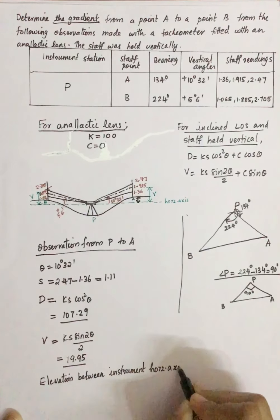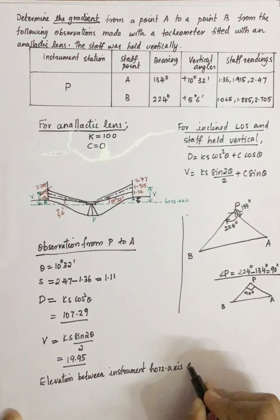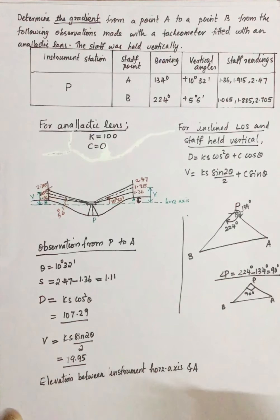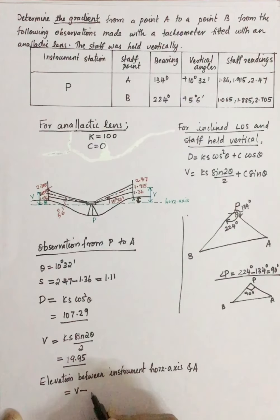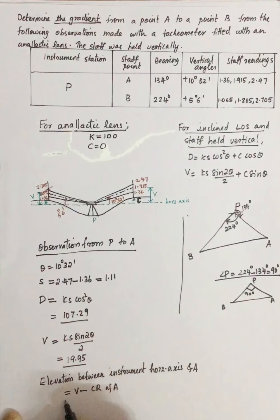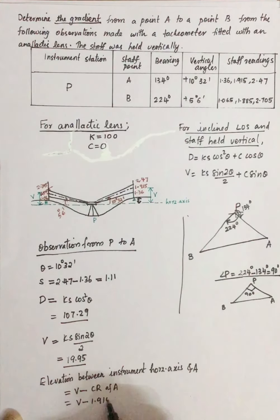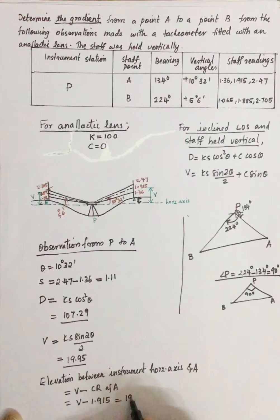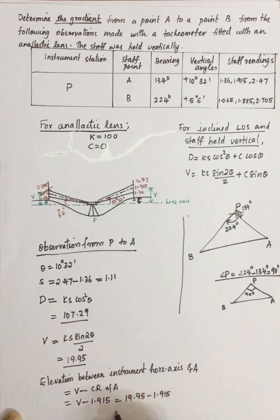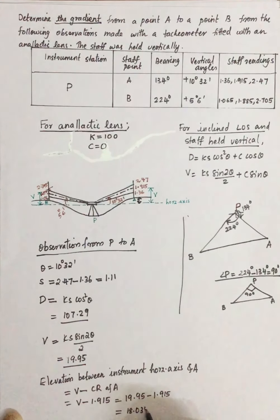The elevation between the instrument horizontal axis and A is equal to V minus the central reading of A, which is equal to 19.95 minus 1.915, and the value is 18.035.